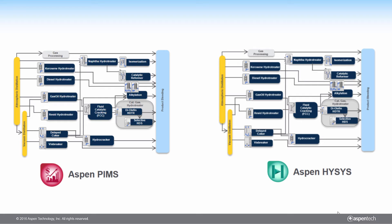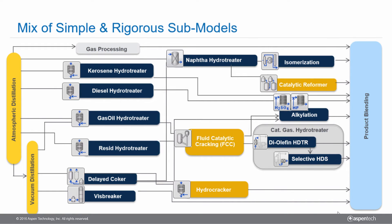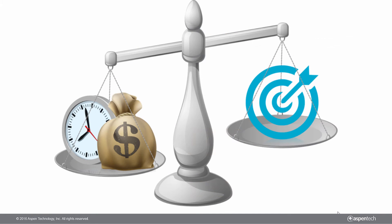We can enhance the accuracy of the model by incorporating rigorous reactor models into the refinery-wide flow sheet. This is made possible by the availability of rigorous kinetic models for all major refinery reactor units in Aspen HySys. This mix of simple and rigorous reactor models enables users to strike the right balance between the model's accuracy and cost.